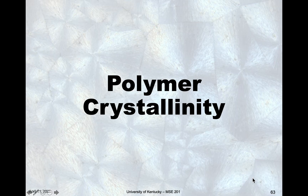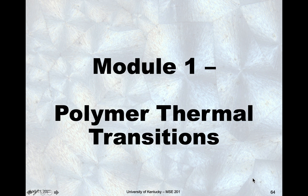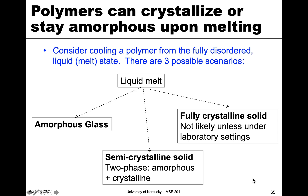Today we're going to start looking at polymer crystallinity, and to start that discussion, I want to talk about polymer thermal transitions that polymers can go through. When we talked about metals and ceramics, we talked about amorphous and crystalline materials. Polymers can do the same thing — they can be crystallized or they can stay amorphous upon cooling. I want to go through the different options or scenarios that we have with polymers.